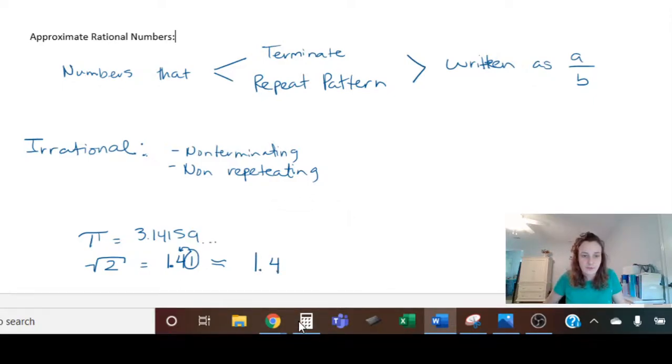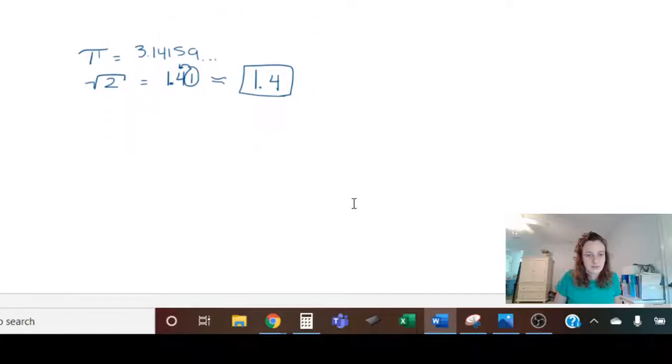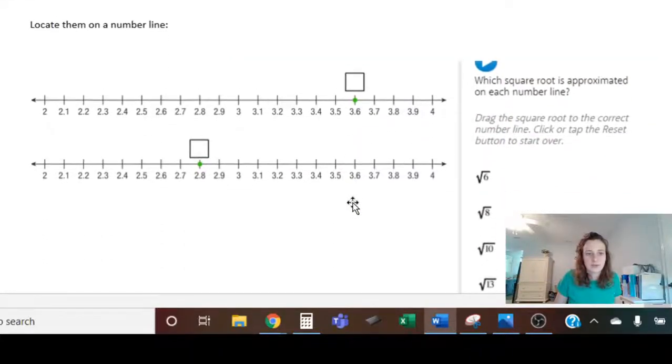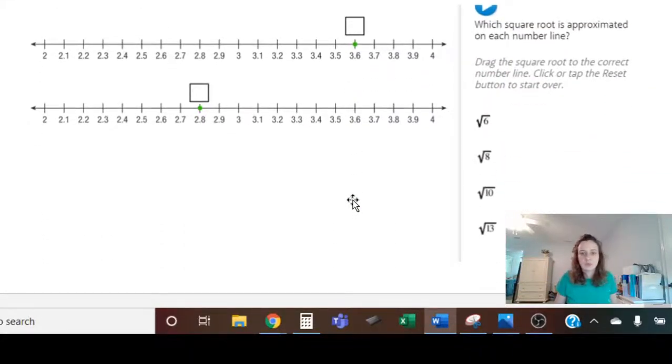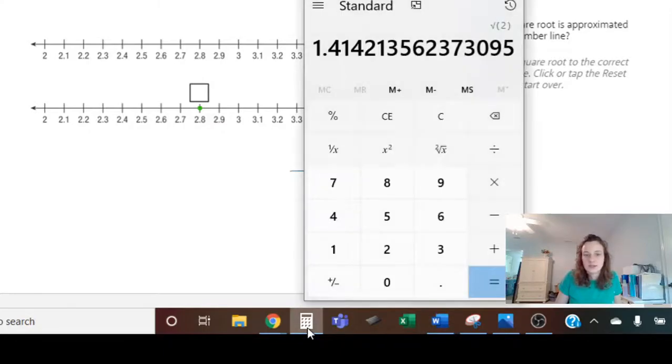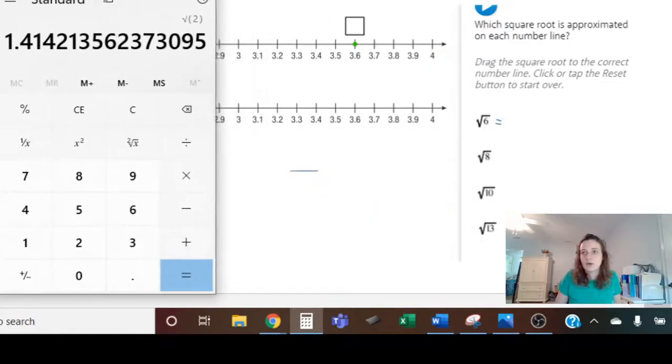Okay, so that's how you approximate your rational numbers. Let's scroll down a little bit and let's do two examples. Alright, in this first example, which square root is approximated on each number line?